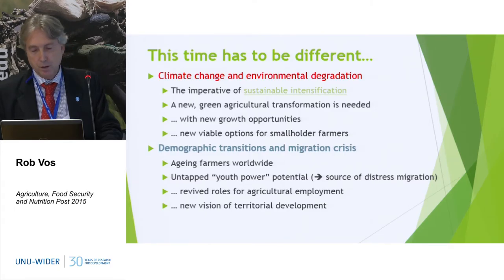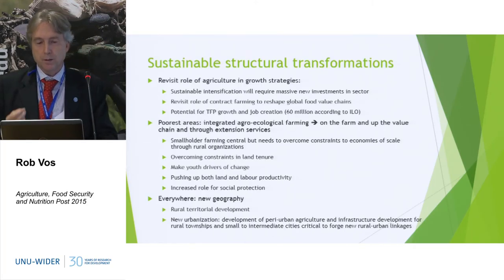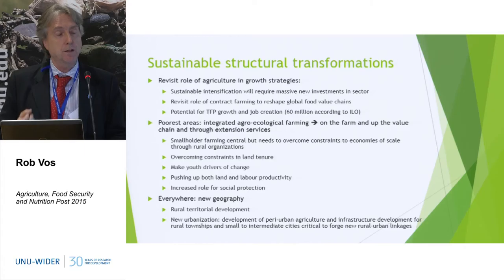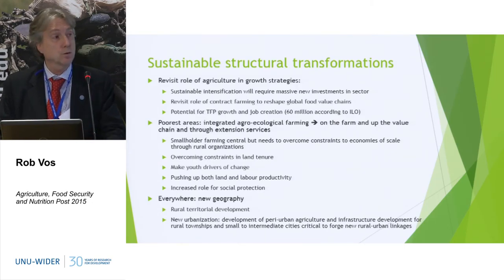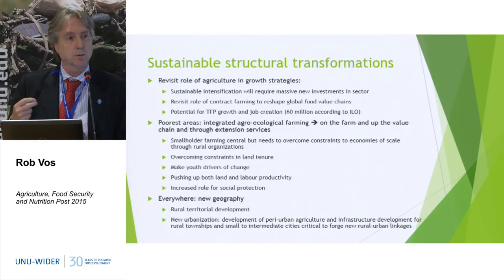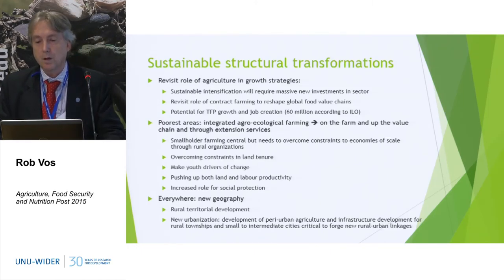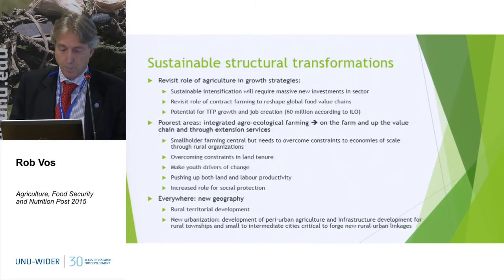My final slide gives some added suggestions to those that Per and David gave. First point: revisit the role of agriculture in growth strategy, even if it's a small share currently of GDP. In the transformation of agriculture, there is a new source of growth and also new source of employment. The ILO estimated that a more sustainable transformation of agriculture — restoration of soils, forests, and so on — could generate worldwide about 60 million new jobs. That's quite significant. It can also be a source of total factor productivity growth.